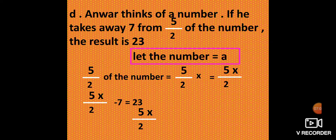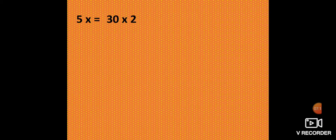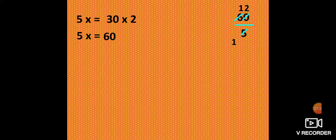So 5X by 2 equal to 23 plus 7. 23 plus 7 is 30. 5X by 2 equal to 30. Then 5X equal to 30 into 2. 5X equal to 60. X equal to 60 by 5. We will get 12. So the number is 12.